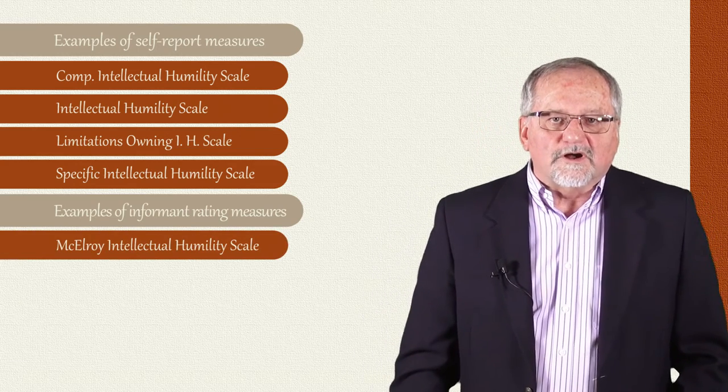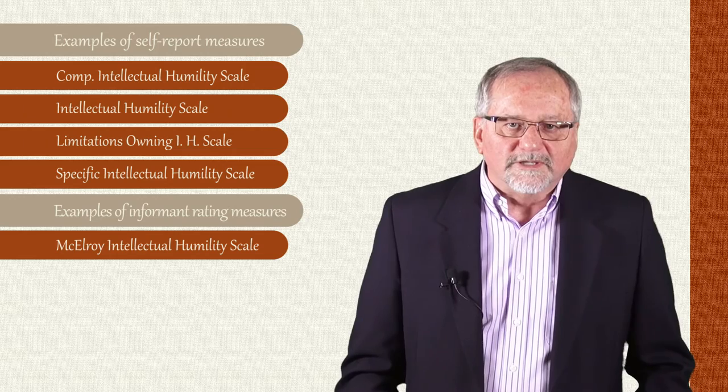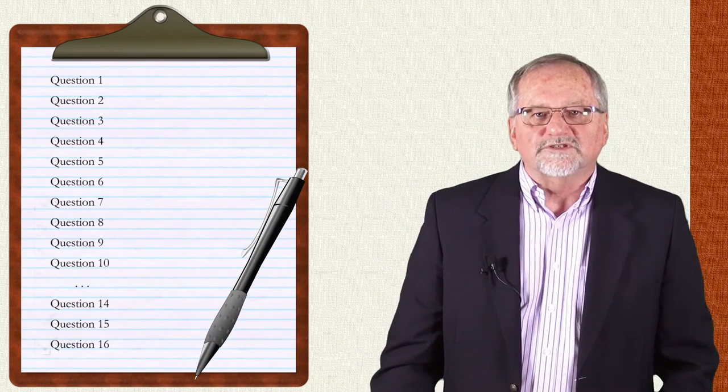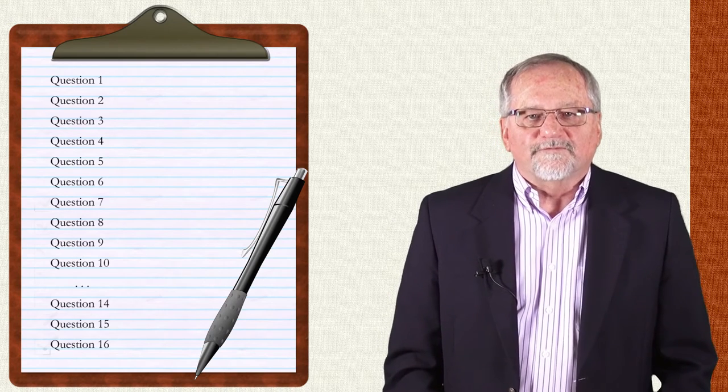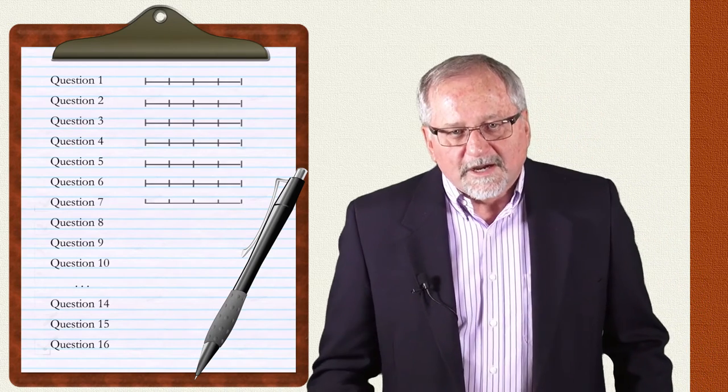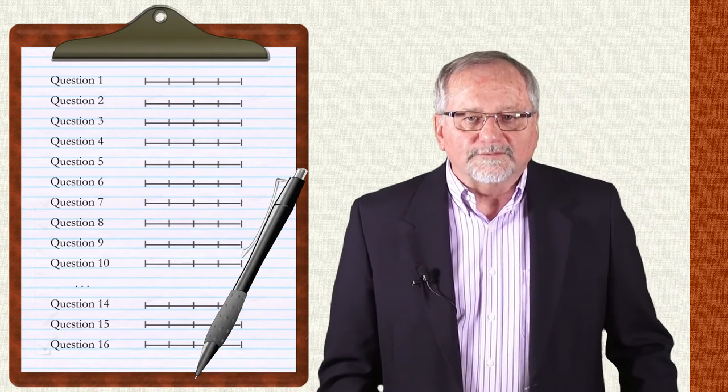The first is called the McElroy Intellectual Humility Scale. This intellectual humility scale was the first published measure specifically of intellectual humility and is an informant rated measure based upon a five-point Likert scale with higher scores indicating higher humility. The scale consists of two factors.